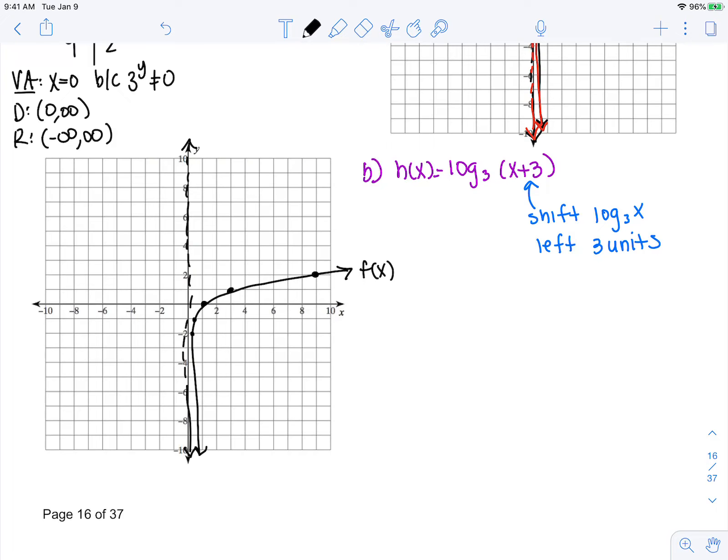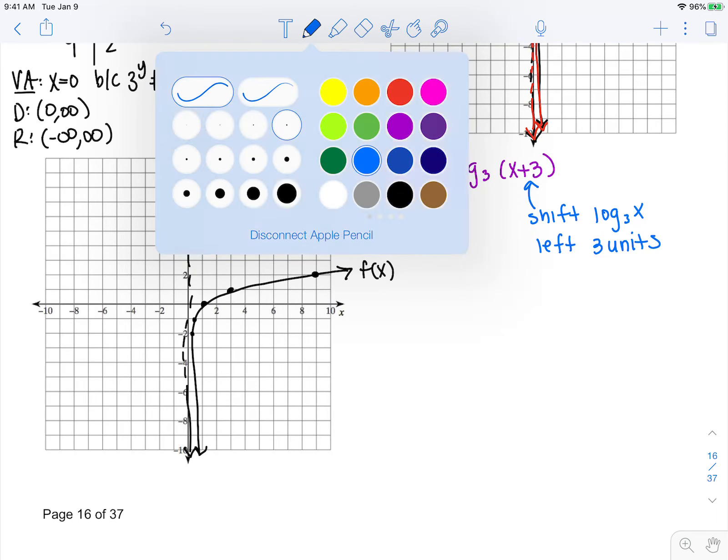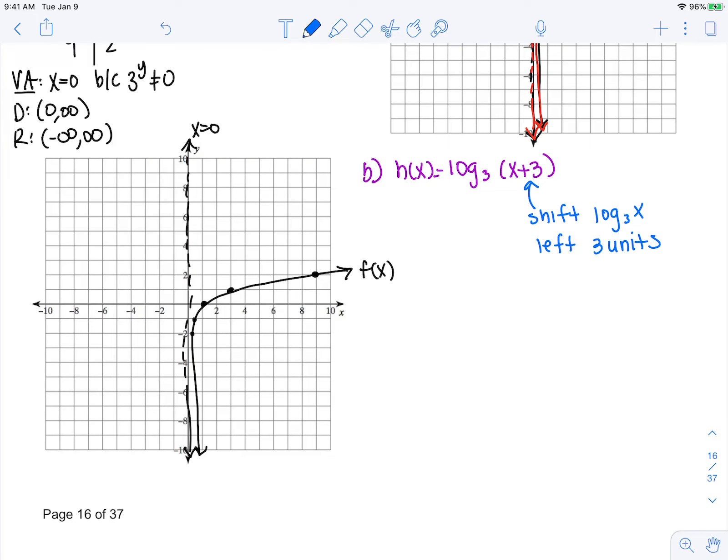We need to shift everything left 3 units. Remember, this is x = 0, so our vertical asymptote is also going to be shifted left 3 units. Here is my new vertical asymptote.